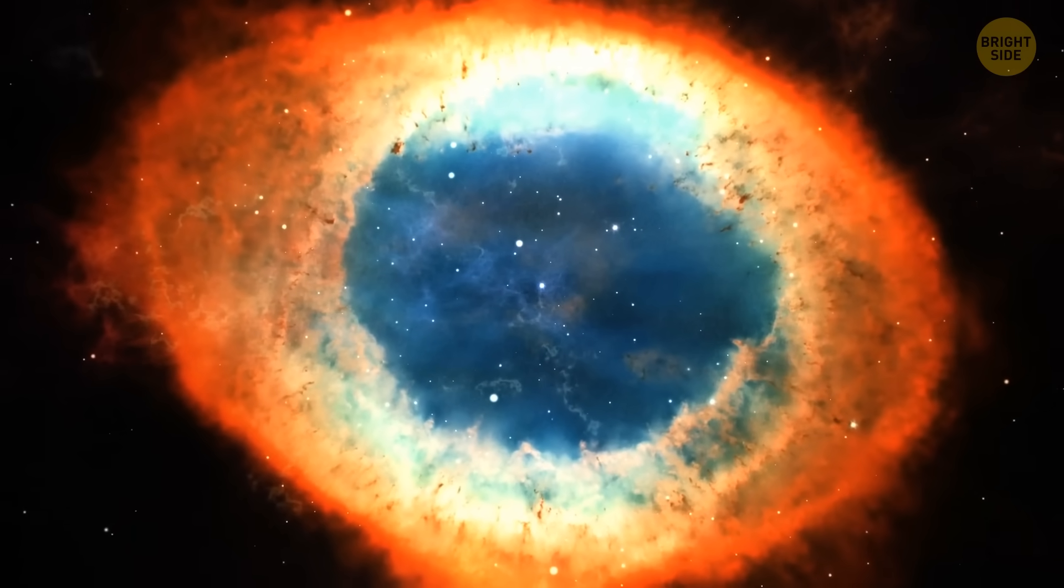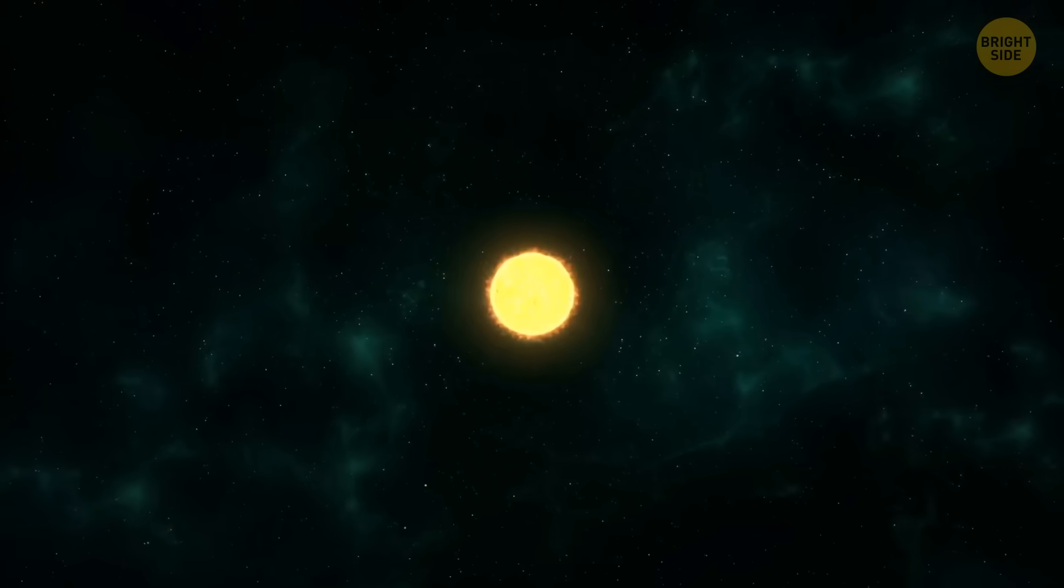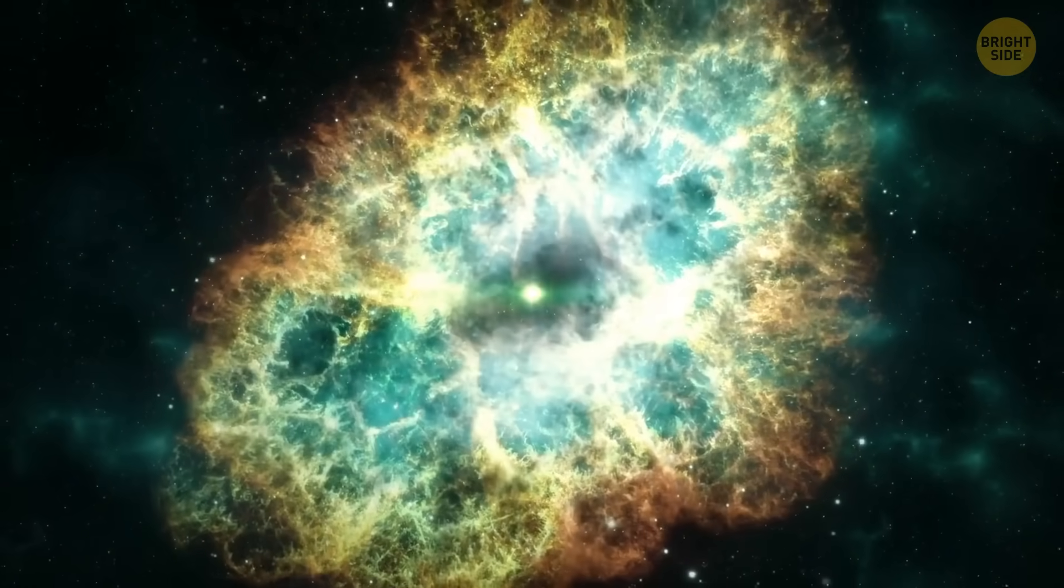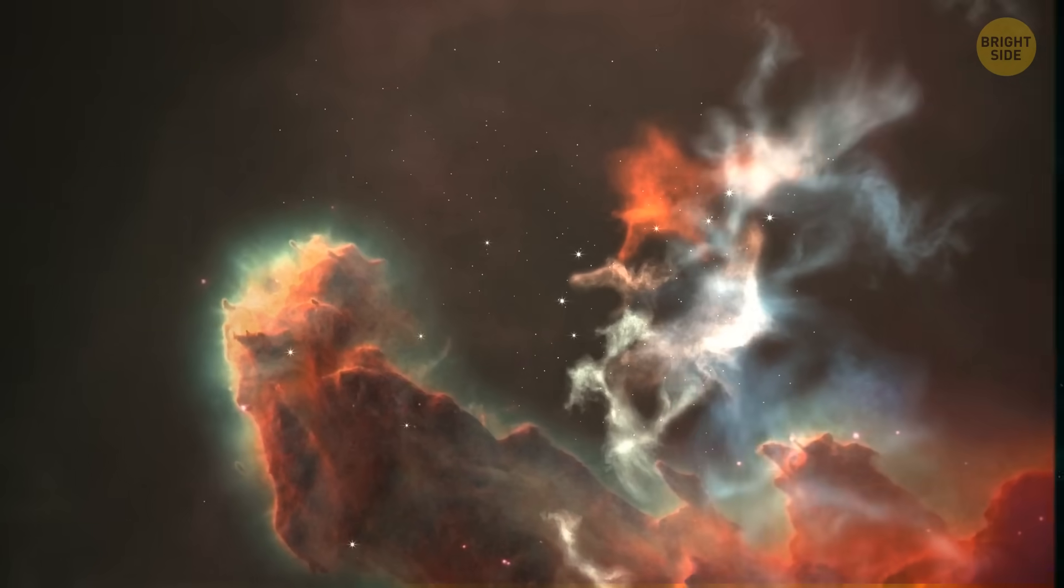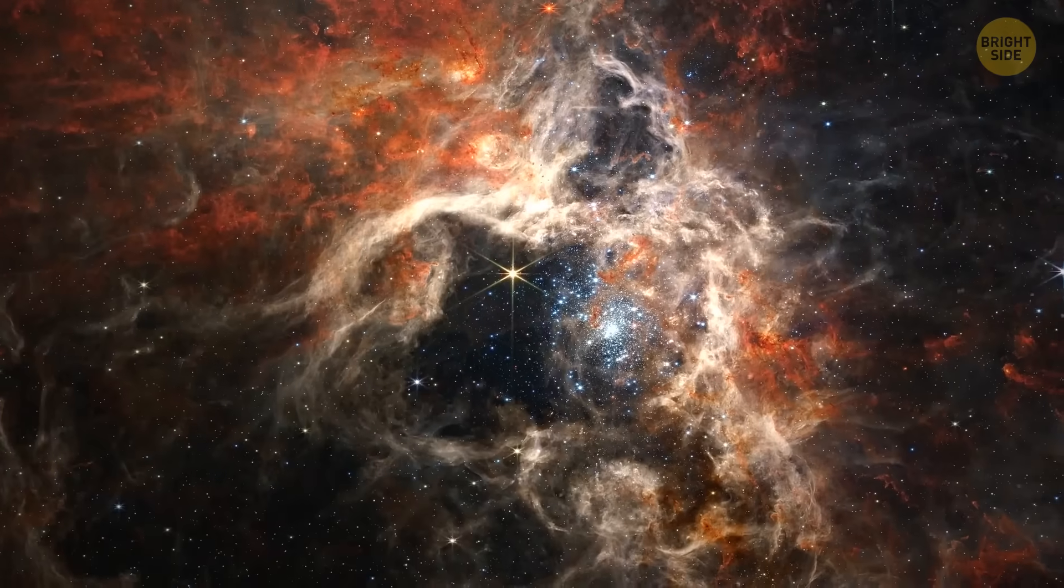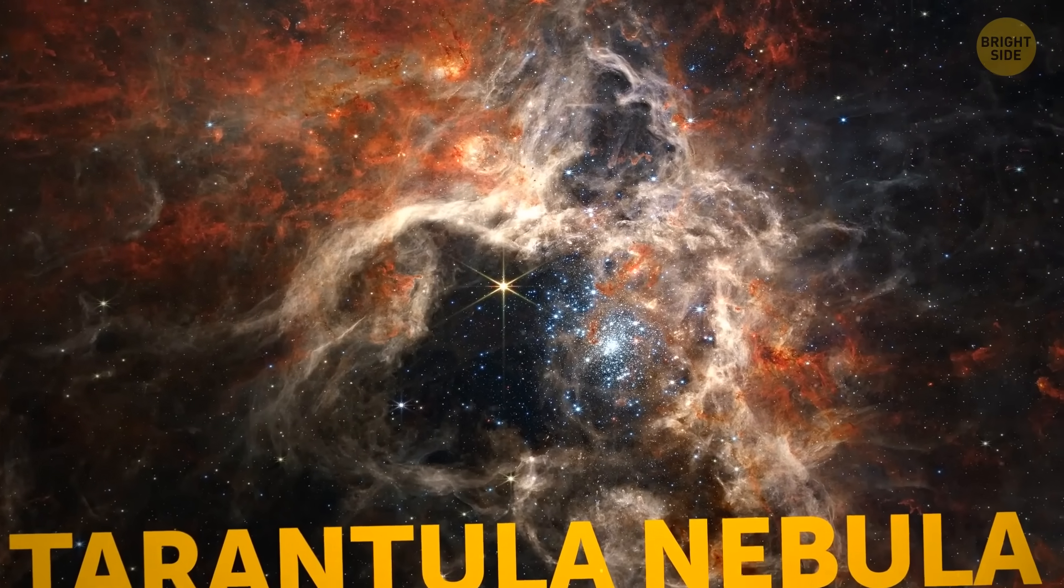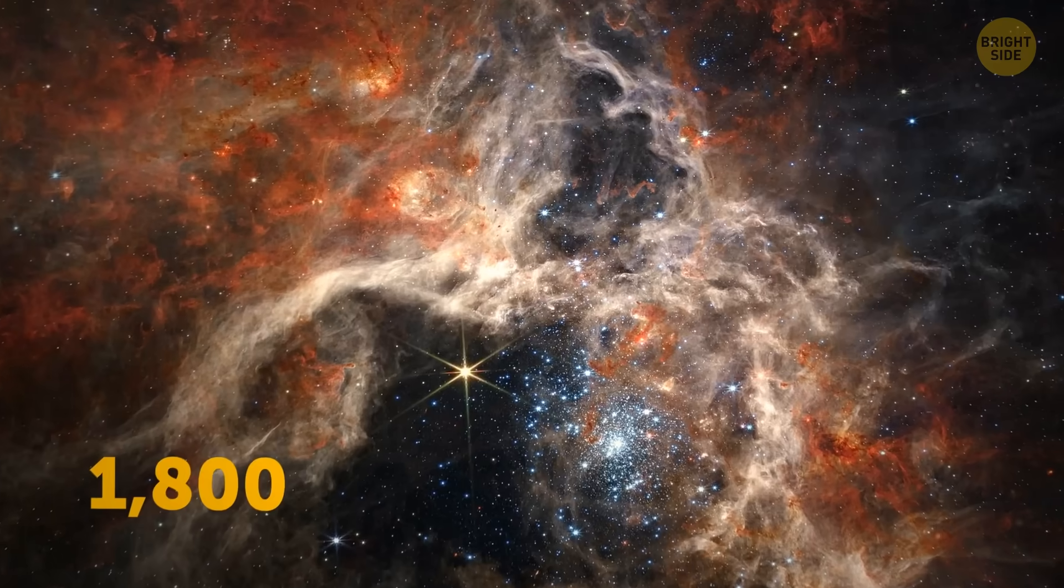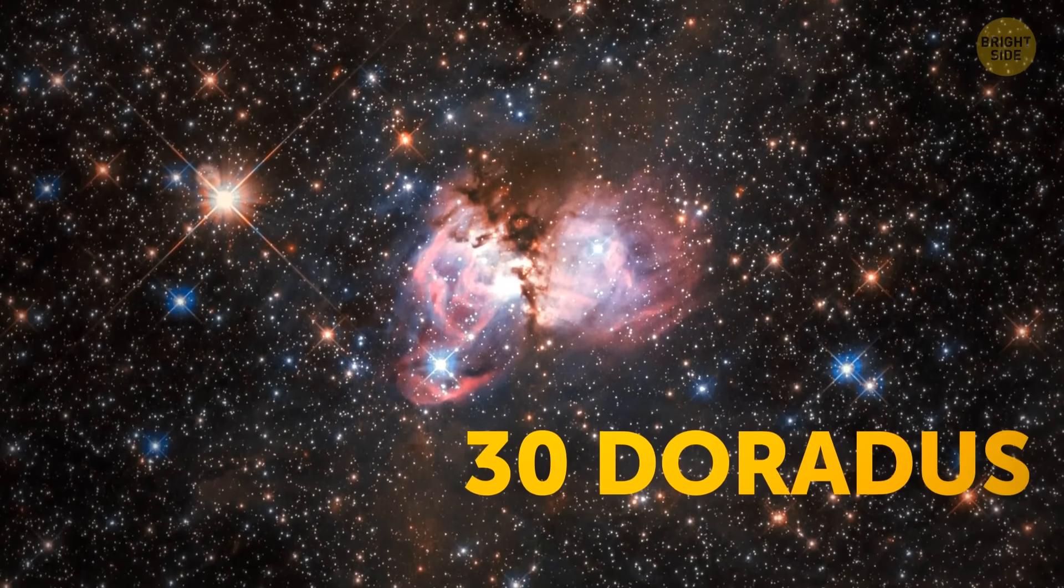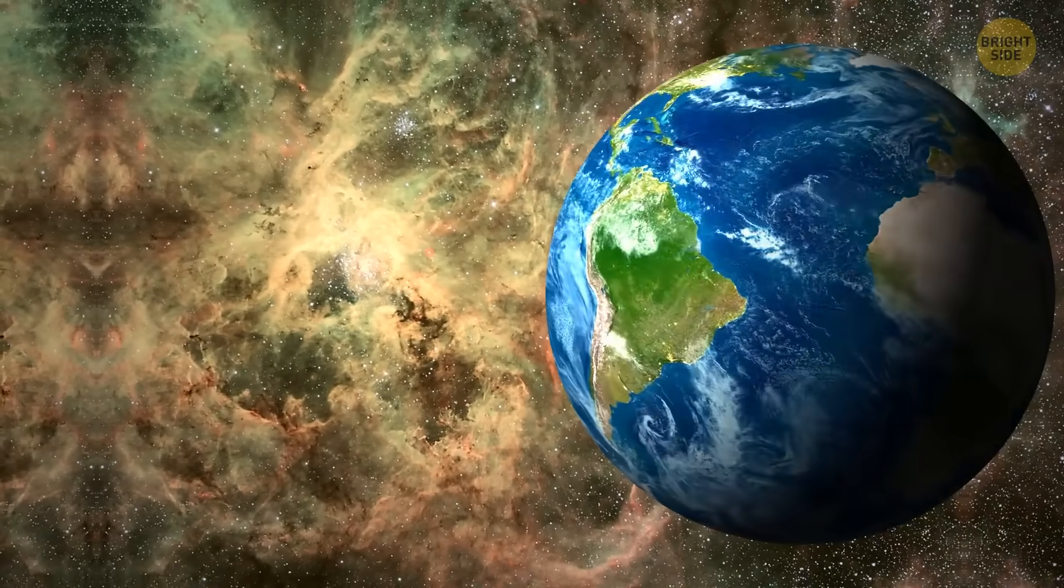A nebula is a massive cloud of gas and dust floating in space. Some nebulae form when a star is nearing the end of its life and throws out loads of gas and dust. Others appear in regions where new stars are forming. The largest nebula we know about is the Tarantula Nebula. In its longest span, it measures over 1,800 light-years. This nebula, also known as 30 Doradus, is located around 170,000 light-years away from Earth.